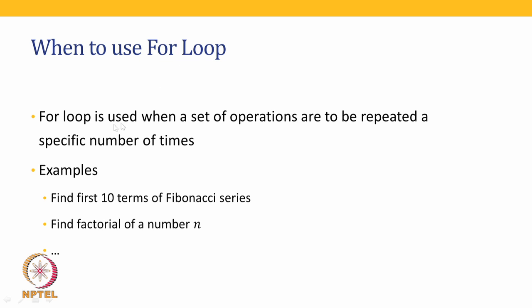For loops should be used when a set of operations is to be repeated a specific number of times — when we know approximately how many times an operation will be repeated. For example, to find the first ten terms of a Fibonacci series, or to find the factorial of a number n, we use a for loop because we know we need to perform the operation a specific number of times.